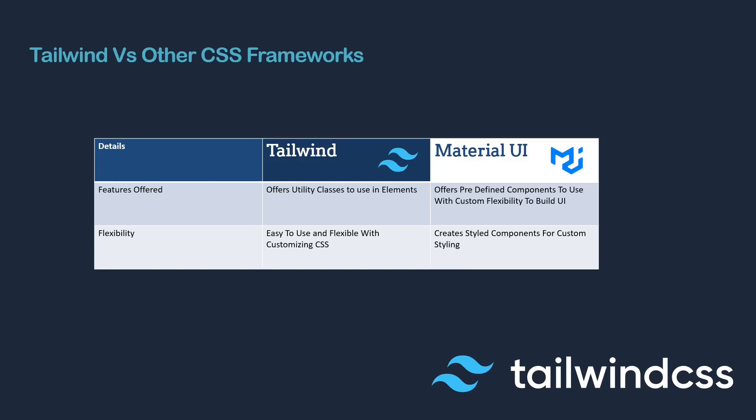Both Tailwind and Material UI are good options. As per your requirements, if you need a set of ready-made UI components, then you can use Material UI. But if you want to design from scratch using CSS utility classes, then Tailwind is the better option.